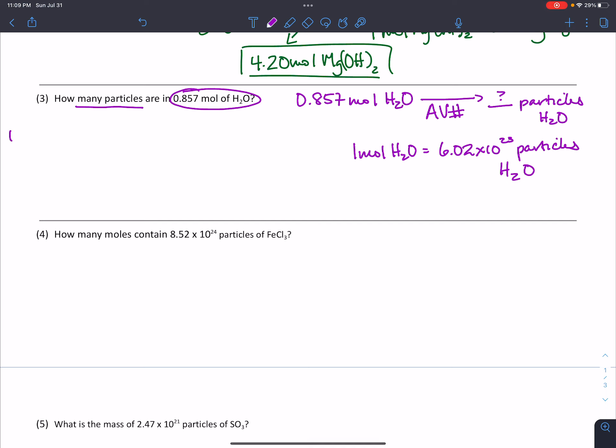So to start the problem, we take what we've been given, 0.857 moles of H2O, and we're going to convert that into particles using Avogadro's number. So we take our unity quality that we've written over here, and we look at the unit that we've been given, and that unit's going to go on the bottom. So one mole of water contains 6.02 times 10 to the 23rd particles of H2O.